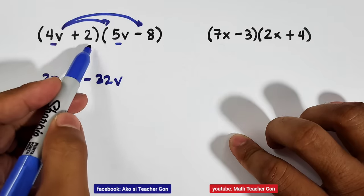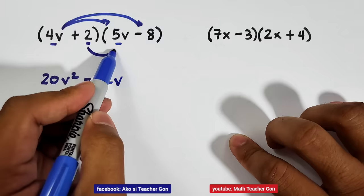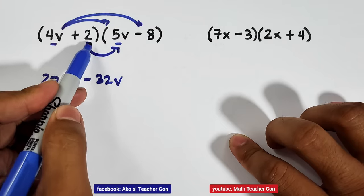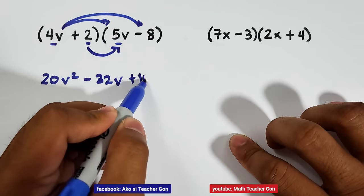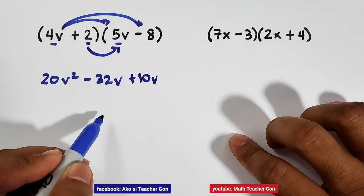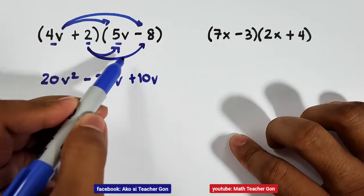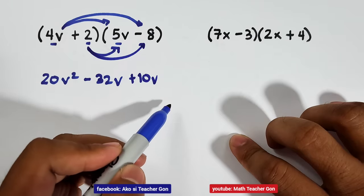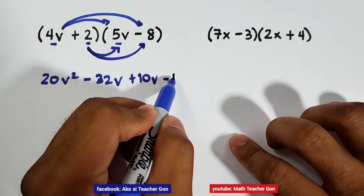Next, inner terms. Inner terms are 2 and 5v. Let's multiply them. 2 times 5v, that is plus 10v. And last terms, for letter L, the constants, 2 times negative 8, that is negative 16.